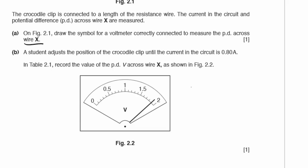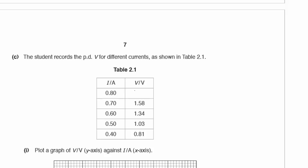Part B: a student adjusts the crocodile clip until the current is 0.80 amps. Record the potential difference V across wire X as shown in figure 2.2. Reading the meter, it goes 1.5, 1.6, 1.7, 1.8, 1.9 volts. Record 1.9 volts in Table 2.1.